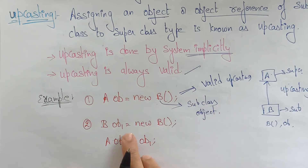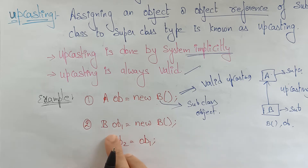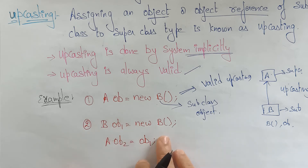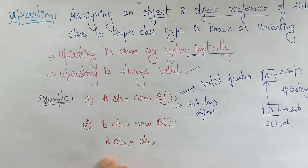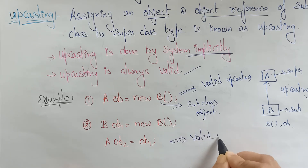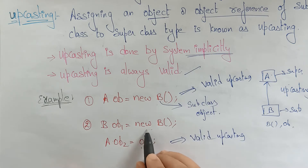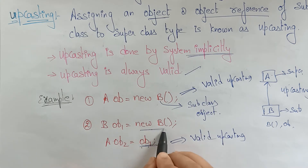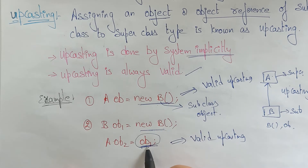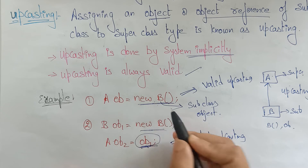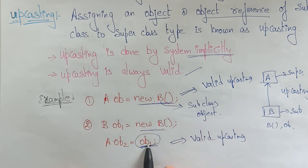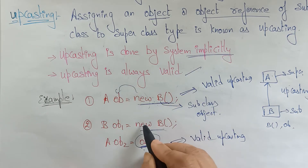Here an object is created, and there is an object reference of class B. The object and object reference are created and the object reference of the subclass is assigned to the superclass object reference. Is it valid upcasting? Yes, it is also valid upcasting. So what we understand from these two examples: assigning an object or object reference of a subclass to a superclass.